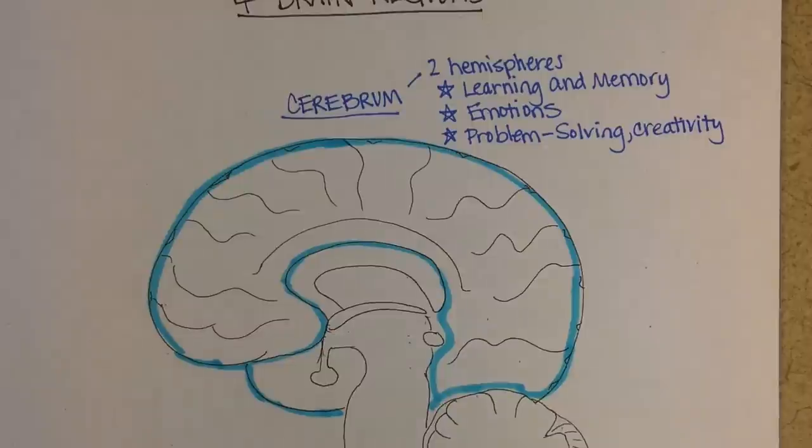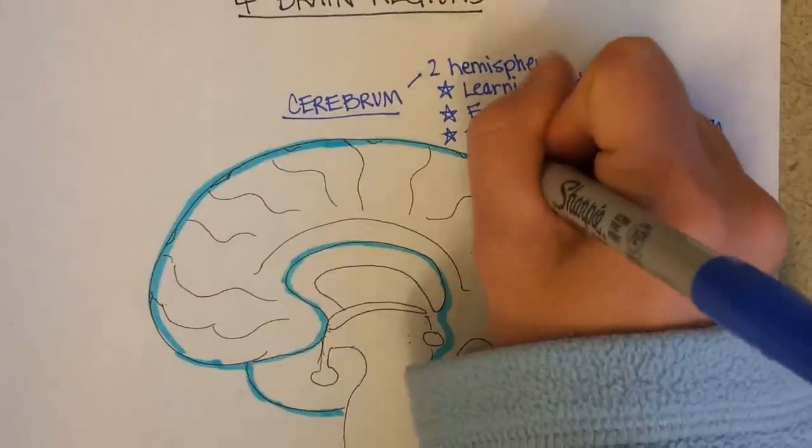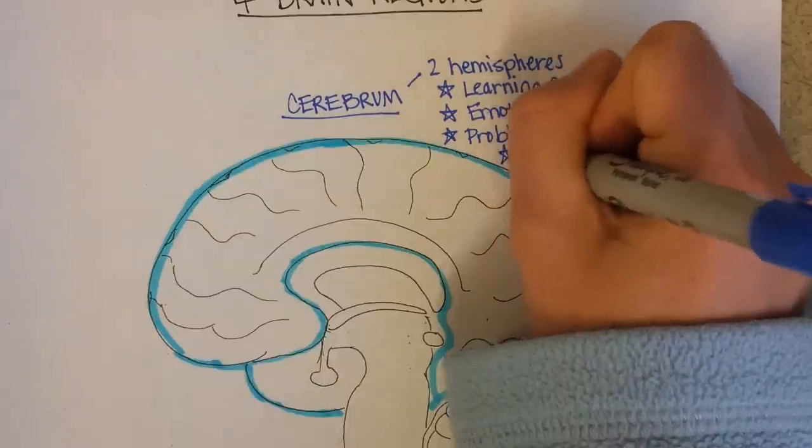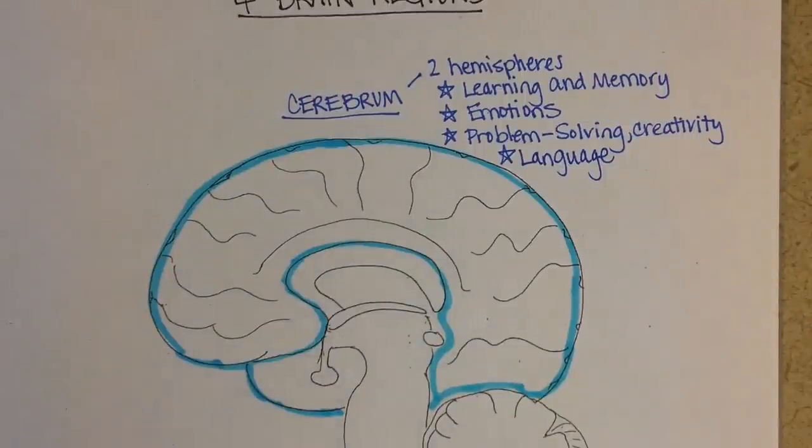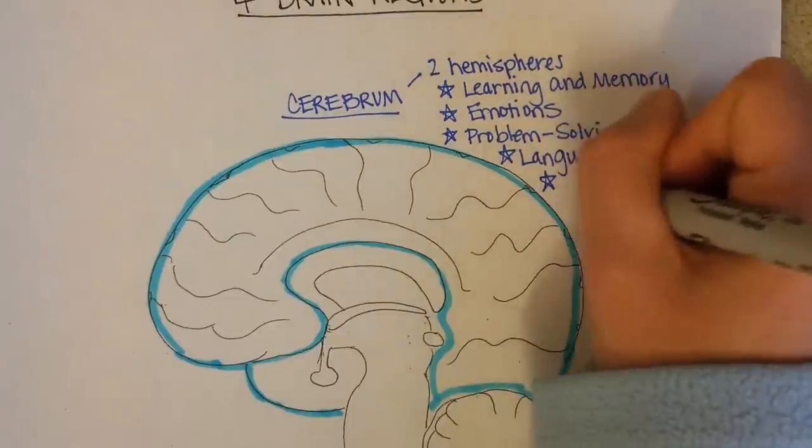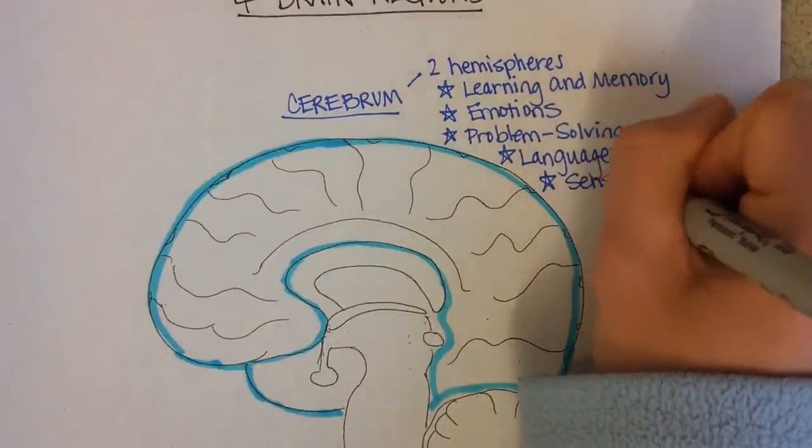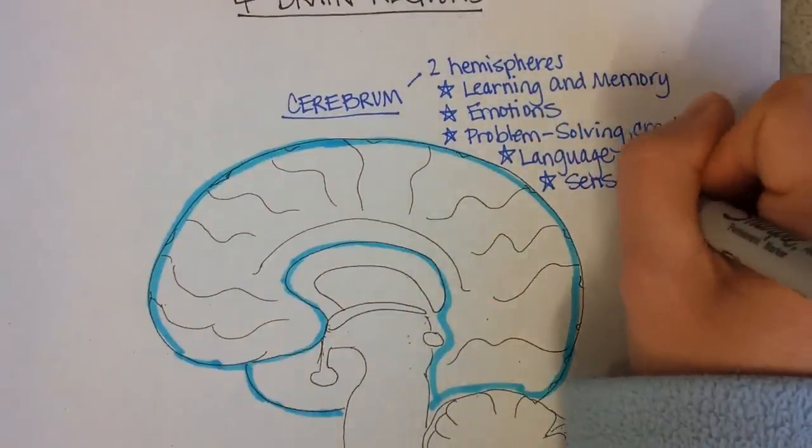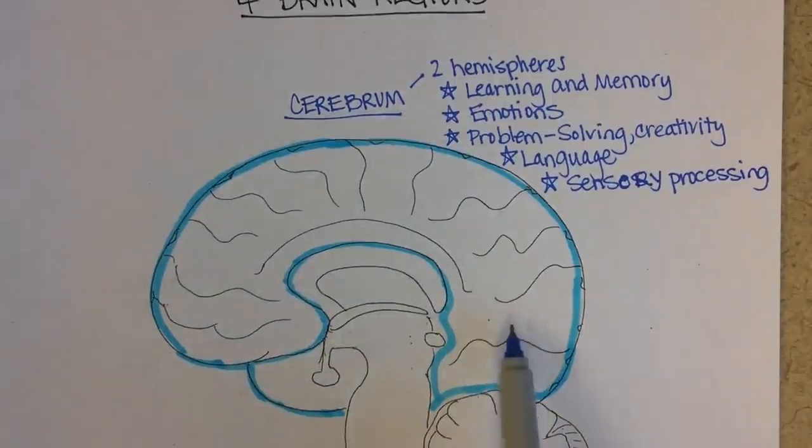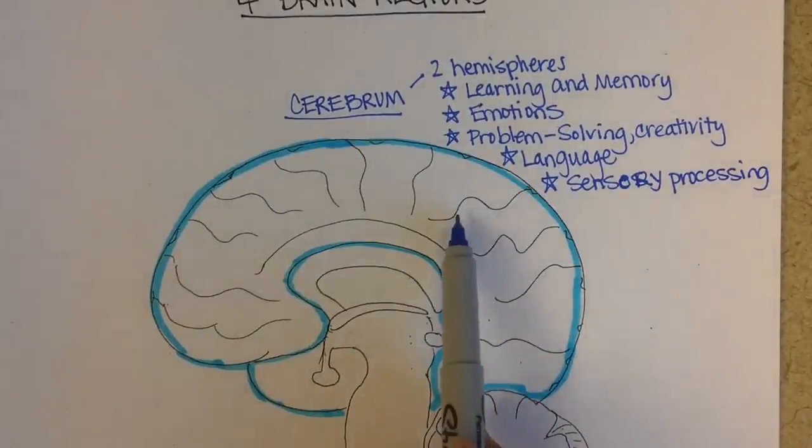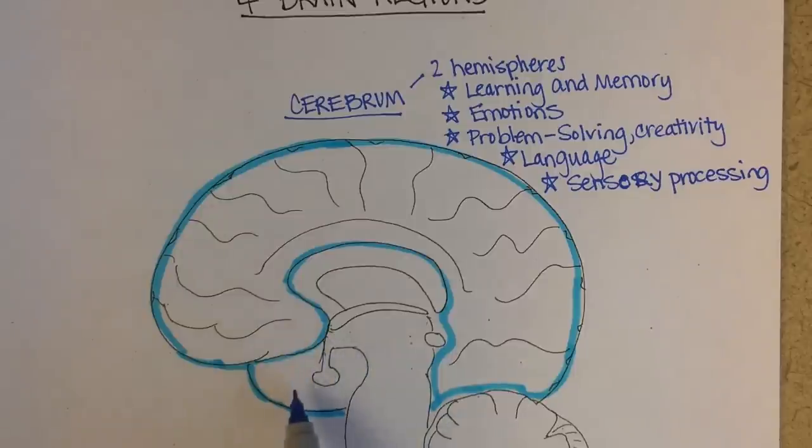What is problem solving, but creatively trying to approach an issue that doesn't have an obvious answer. And then when we want to communicate, of course, we need language. All of the language centers are located in the cerebrum. And the processing of the senses is located. So I should put sensory processing.